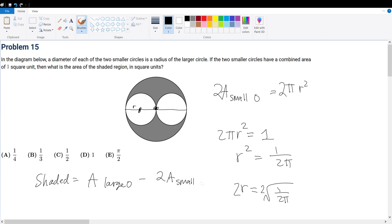But then we already know what this quantity is. This quantity is 2πr². But then since r is equal to the square root of 1 over 2π...